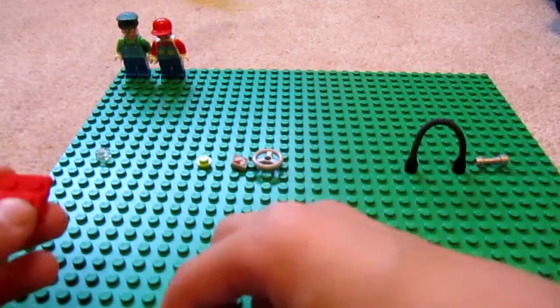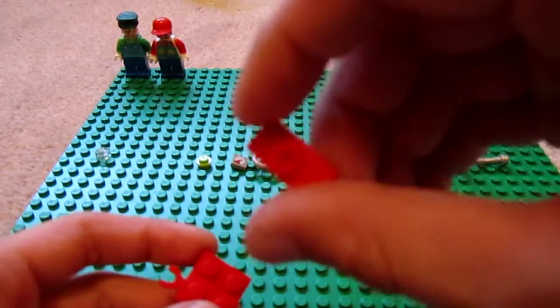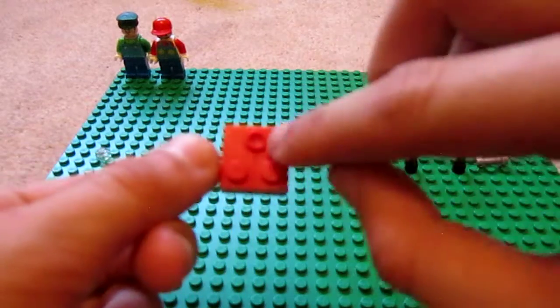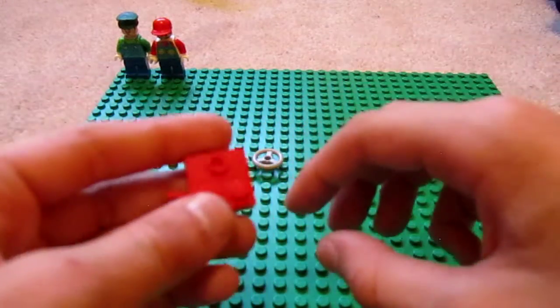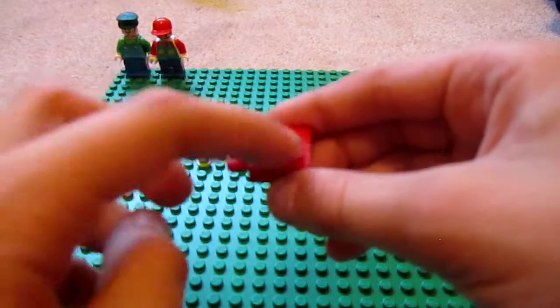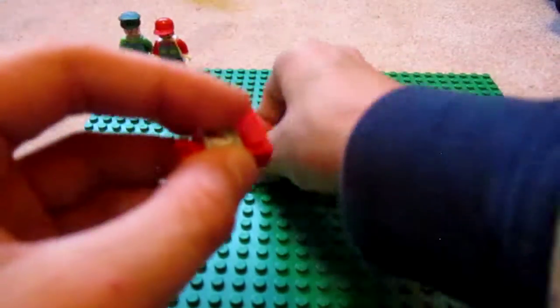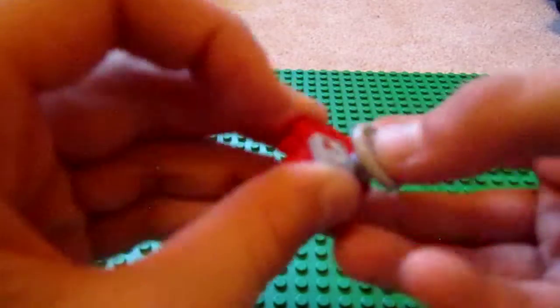Put one of these on like that, a jumper plate. Right here we're gonna put a 1x1 with detail, flat smooth and light gray, and then a light gray steering wheel.